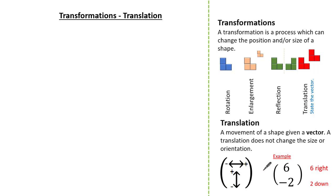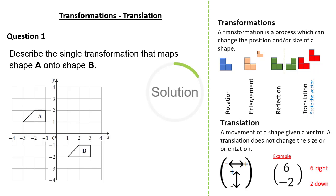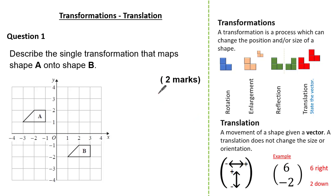Let's look at our first exam question where we're asked to describe. The question wants us to describe the single transformation that maps shape A onto shape B. This exam question is worth 2 marks so it's important that we state 2 things. See if you can give it a go and press pause if you need. We need to identify only one of our four transformations. We can clearly see it's translation as it's a simple movement from A to B with no change in size or orientation. Writing 'translation' will get us our first mark.